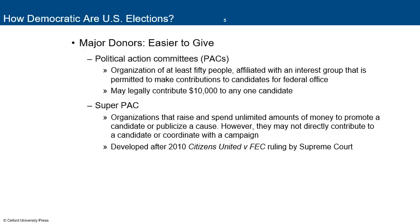For major donors, it's much easier to give through political action committees. PACs are organizations of at least 50 people affiliated with an interest group, permitted to make contributions to a candidate for federal office, and can legally contribute up to $10,000 to any one candidate. They'll call themselves names like 'Citizens for Concerned Immigration,' appearing to be about a policy issue while really supporting or working against a candidate. A PAC can spend its money against a candidate just as much as for one.